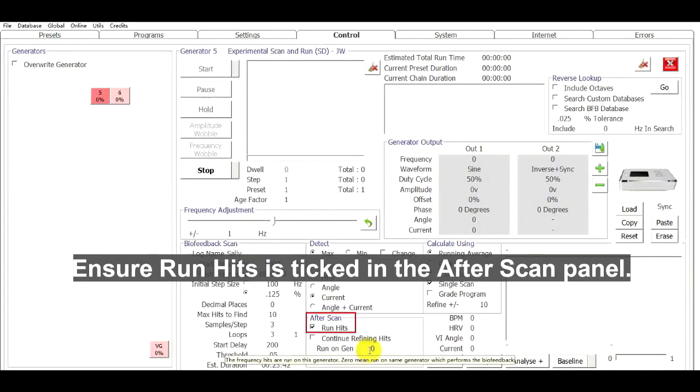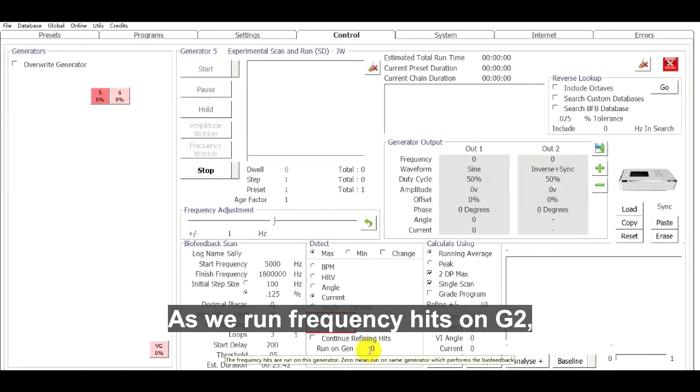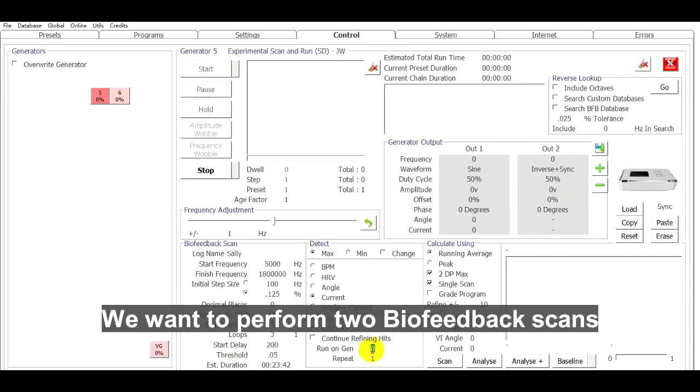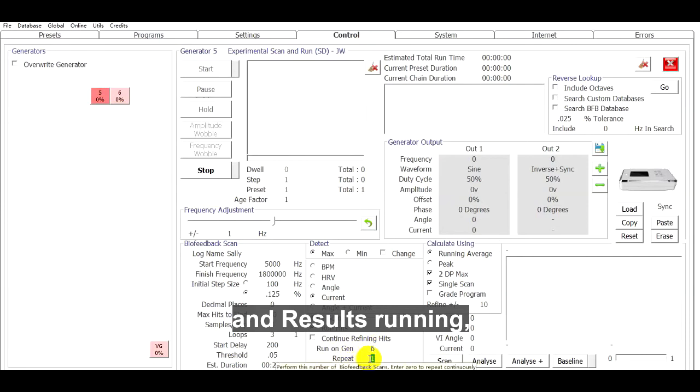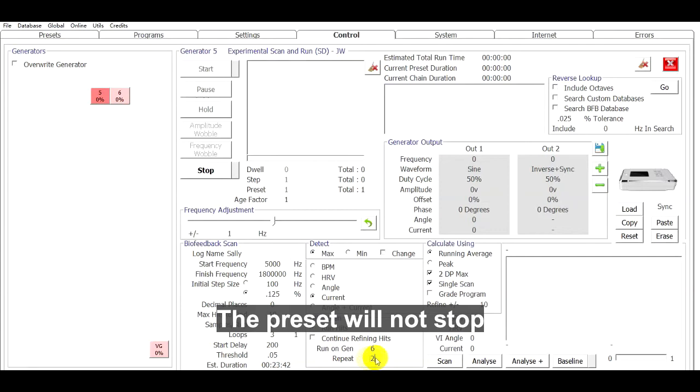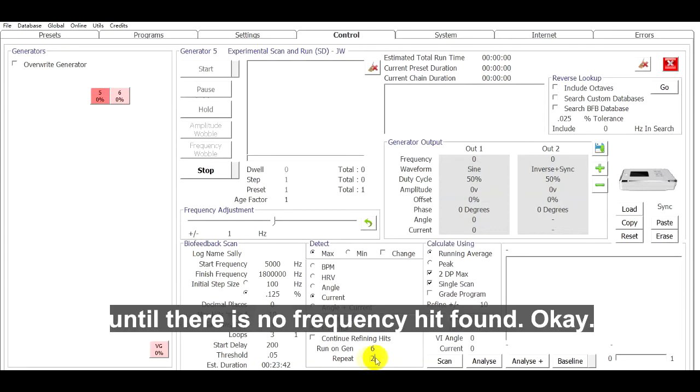As we run frequency hits on G2, we can enter 6 here. We want to perform two biofeedback scans at results running, so we enter 2 in this box. You can also enter 0 to repeat continuously. The preset will not stop until there is no frequency hit found. OK.